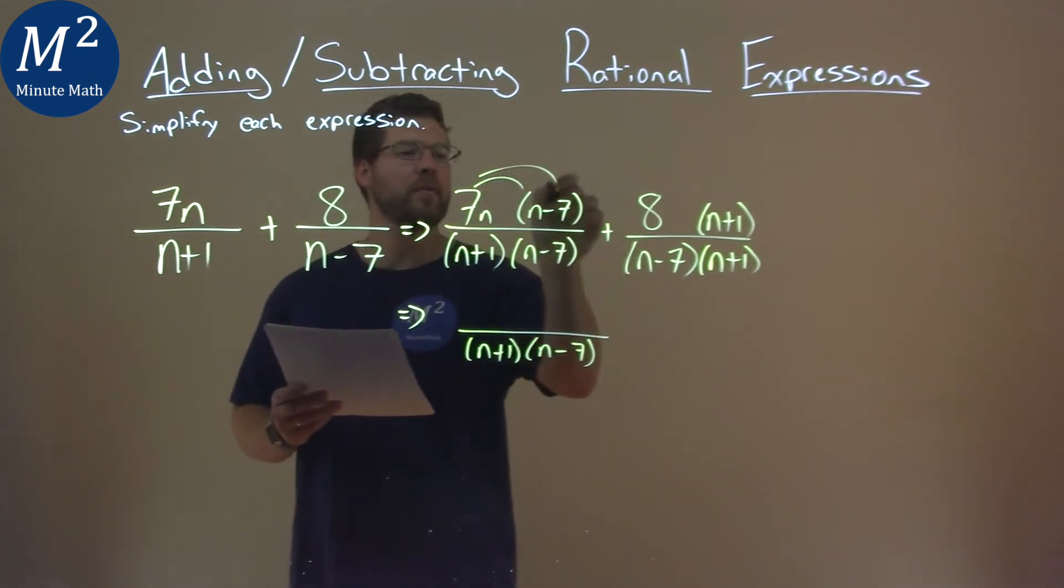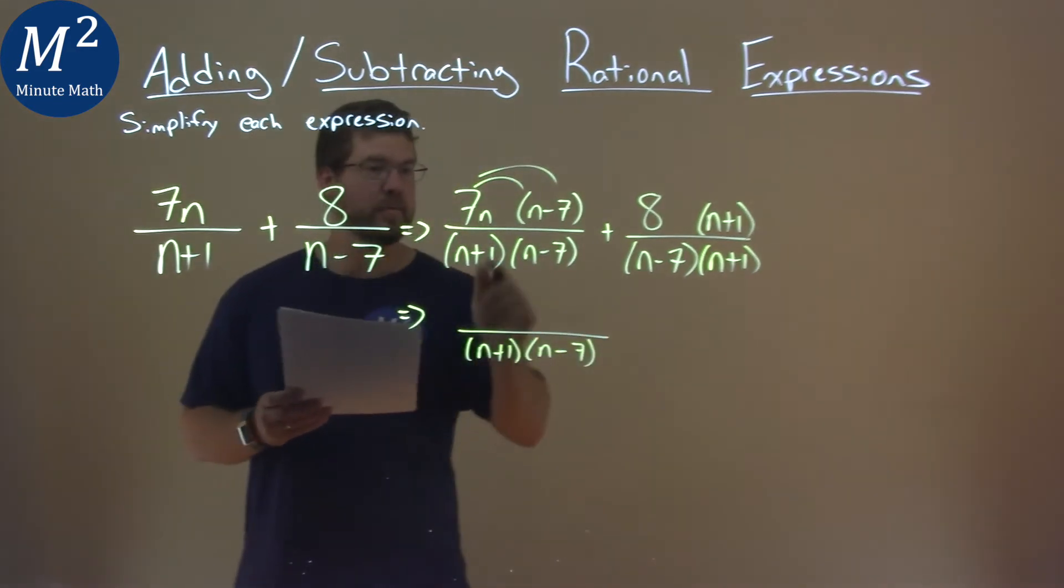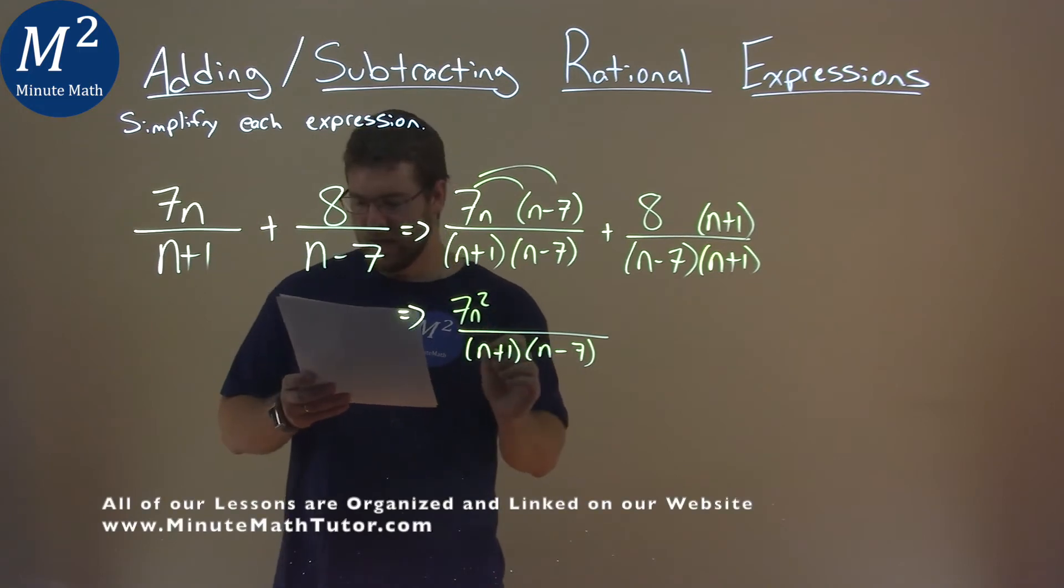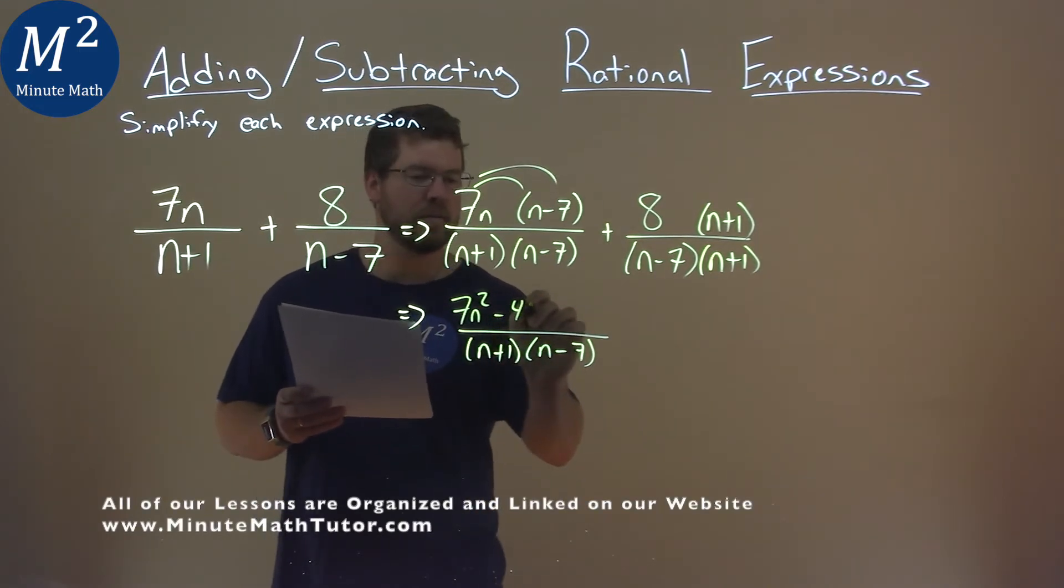The numerator, we have to multiply these out. So 7n times n is 7n squared, and 7n times 7 is 49. We subtract it.